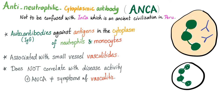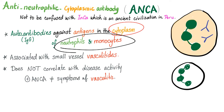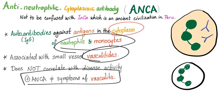ANCA — anti-neutrophilic cytoplasmic antibodies — are IgG autoantibodies, not against the nucleus and not against the cytoplasm of every cell, but specifically against the cytoplasm of neutrophils and monocytes only. They are not associated with arthritis but with vasculitis. Again, they do not correlate with the severity of symptoms.